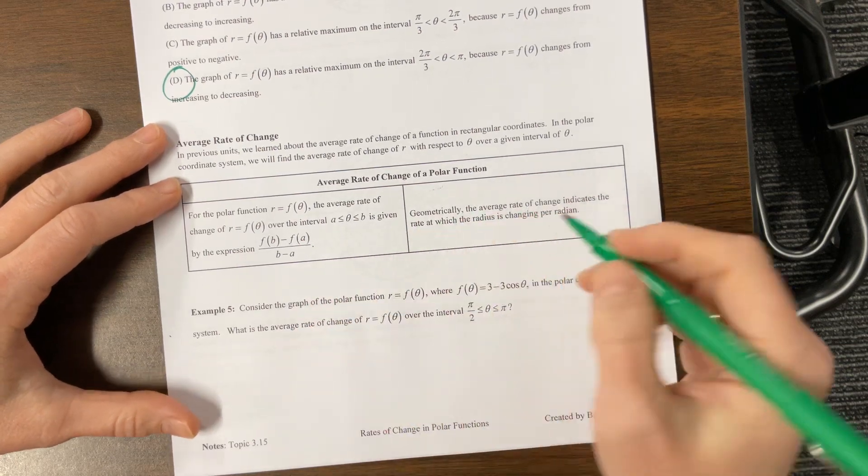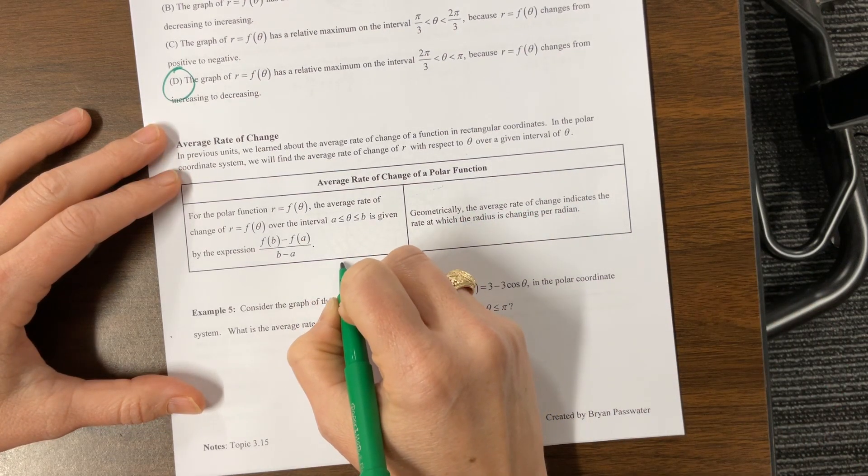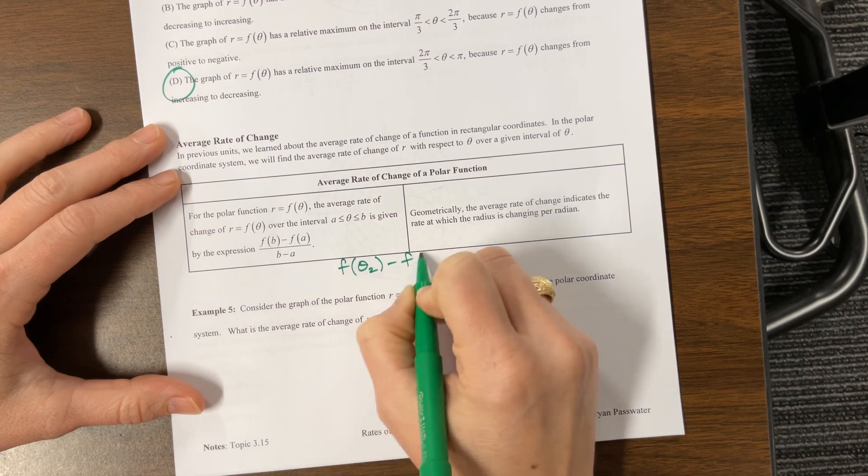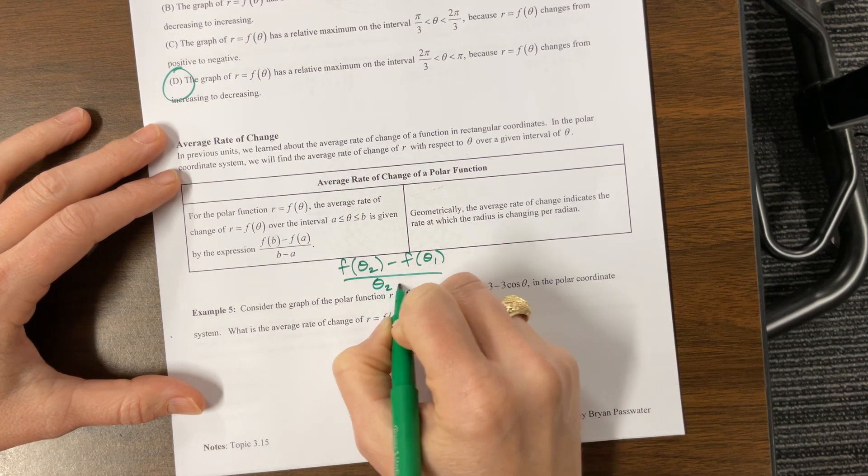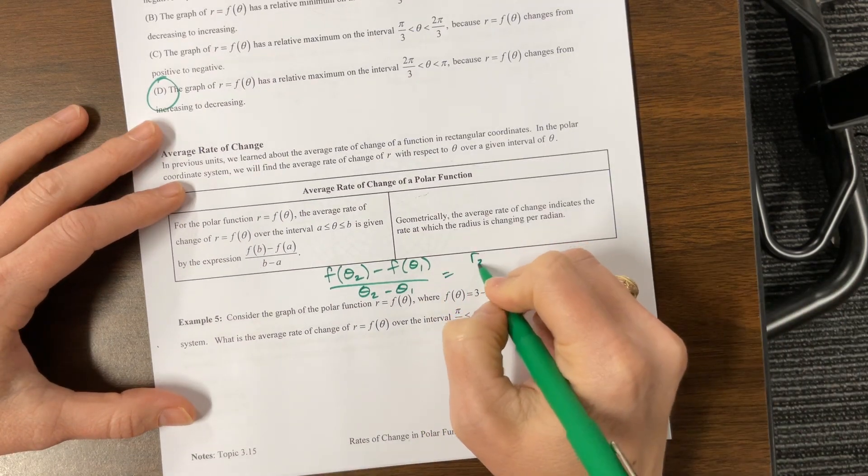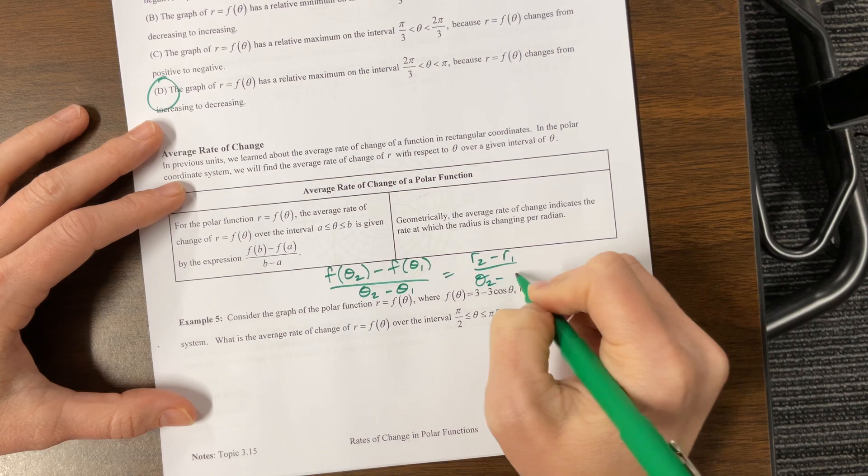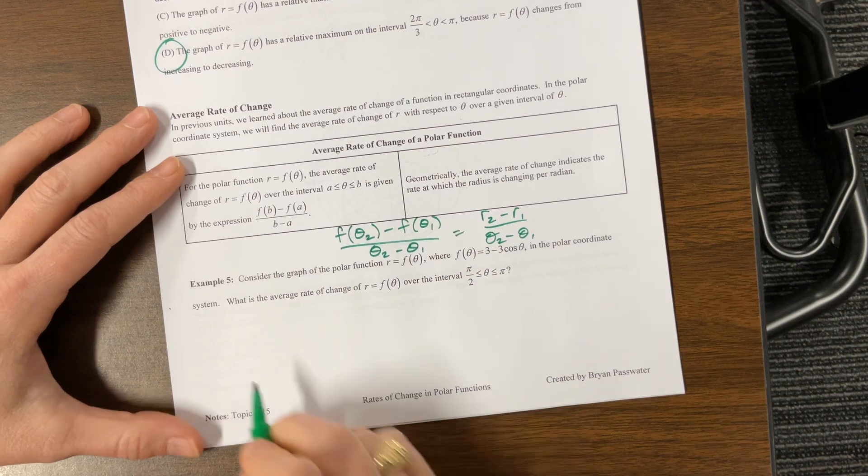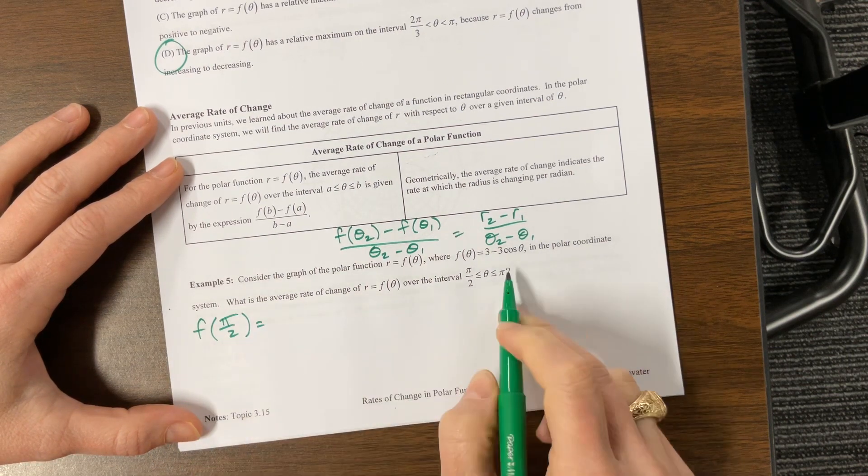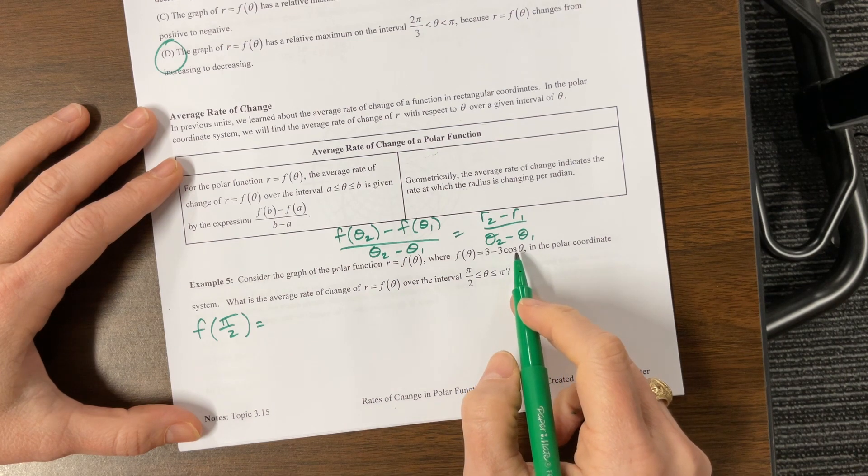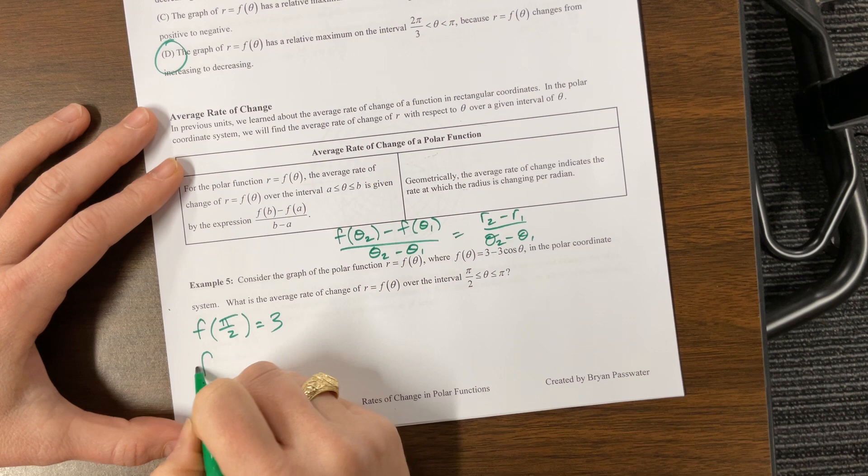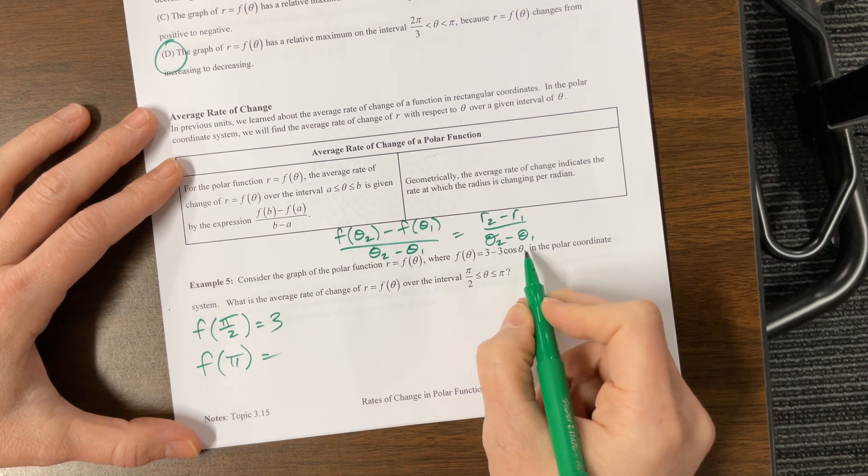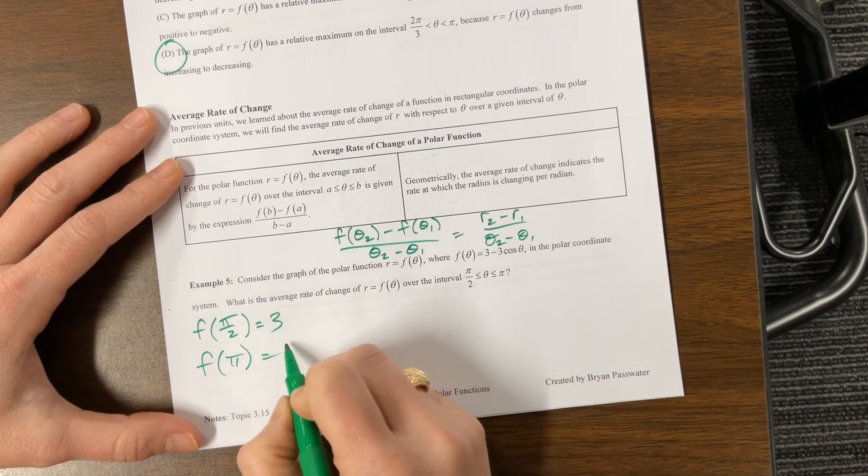Basically on this one, we could say it's f of theta 2 minus f of theta 1 over theta 2 minus theta 1, or this would be r2 minus r1 over theta 2 minus theta 1. Consider this: what is the average rate of change over the interval from pi over 2 to pi? Let's see, f of pi over 2 equals, when I plug in pi over 2, cosine of pi over 2 is 0, so 3. And f of pi, cosine of pi is negative 1, times negative 3 is positive 3, plus 3 is 6.